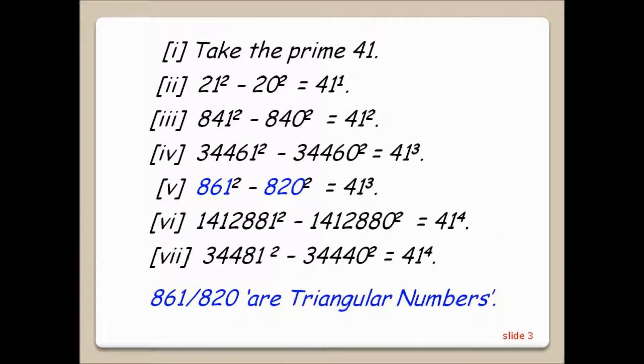Take the prime 41. 21 squared minus 20 squared equals 41. 841 squared minus 840 squared equals 41 squared.